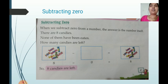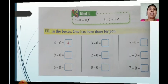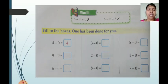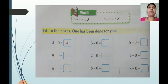Suppose your father or mother gives you 4 chocolates and you have not eaten any one. How many chocolates remain? 4. Open page number 48. Mind it: when we subtract 0 from any number, the answer is not 0 — that is wrong. The answer is the number itself. For example, 5 minus 0 equals 0 is a wrong answer, and 5 minus 0 equals 5 is the correct answer.